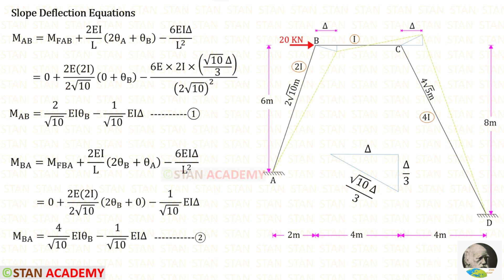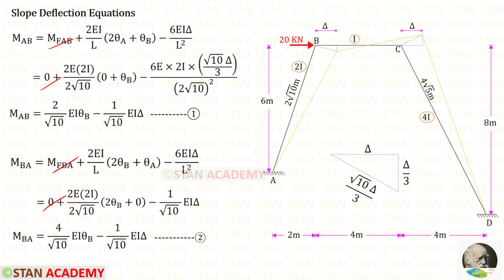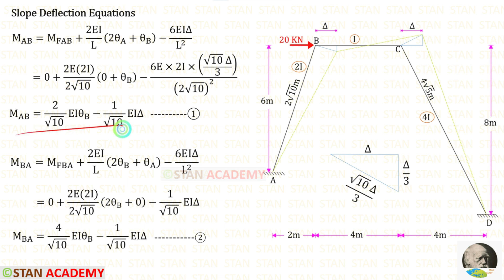Now let us make the slope deflection equations. First, let us make them for member AB. Since this member is subjected to sway, we have to add the sway moments to the equations. We know that the sway occurs towards the right side, so for the inclined members AB and CD the sway moments should be taken as negative, and for the horizontal member it should be taken as positive. The fixed end moments are zero. The length of AB is 2 root 10. The moment of inertia for AB is 2i, so instead of i we apply 2i. The displacement is root 10 upon 3 delta. At point A there is a fixed support, so theta A will be zero. Finally, for member AB we have made two equations.